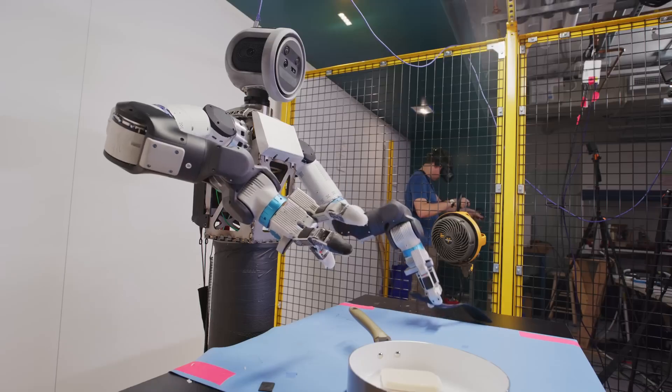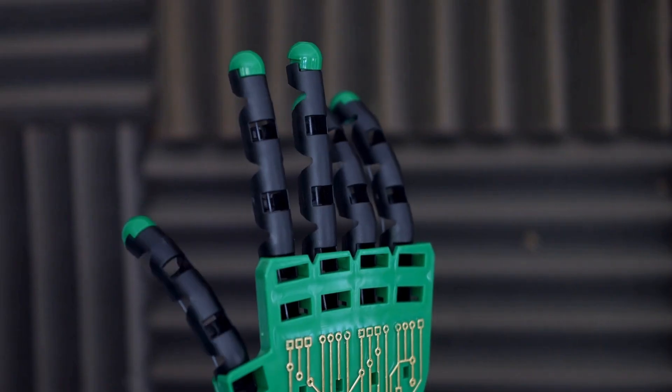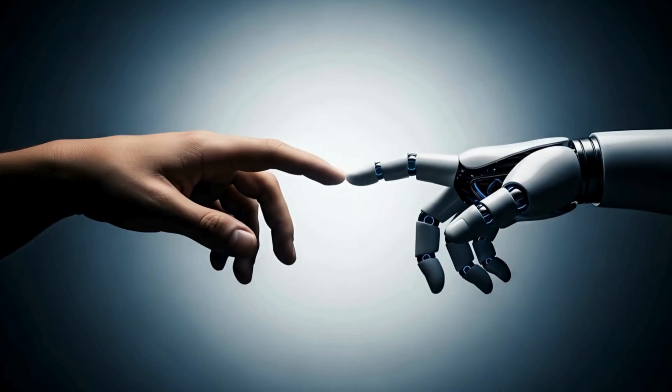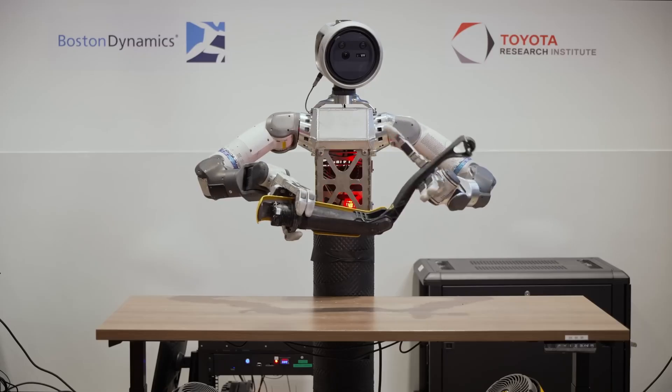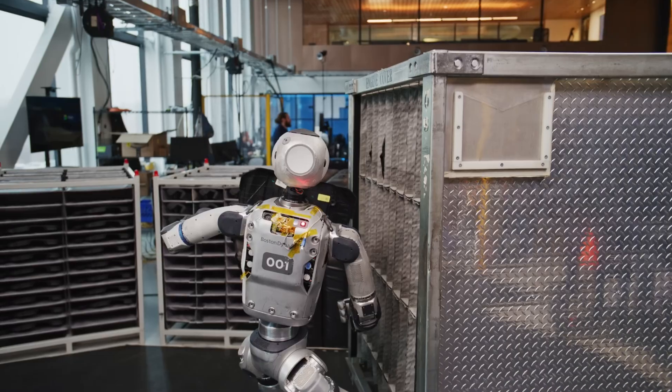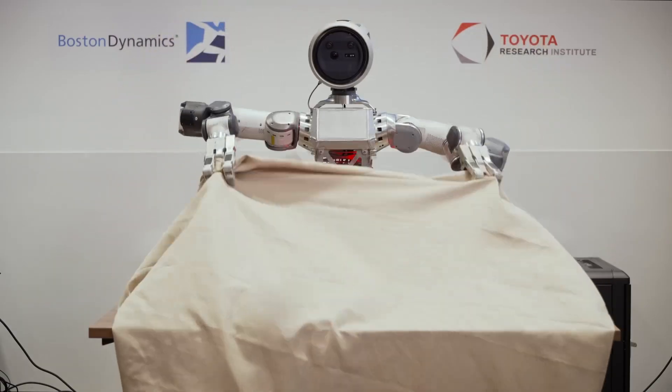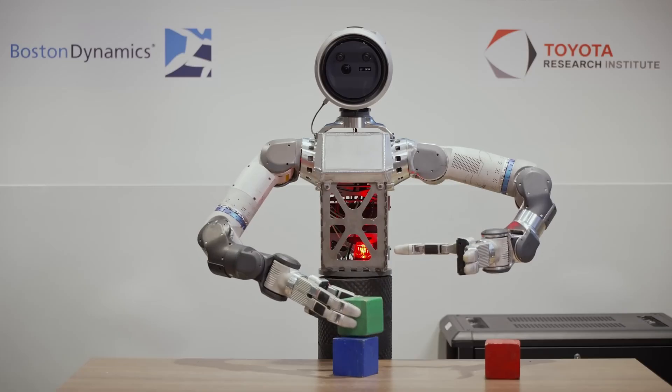Boston Dynamics debated for months whether to add more fingers but decided to stay with three. More fingers mean more complexity, slower movement, and more potential points of failure. Three is enough for pinch grasps, stable rotations, and even heavy lifts. And the thumb makes two-finger precision grips possible for smaller or delicate objects.